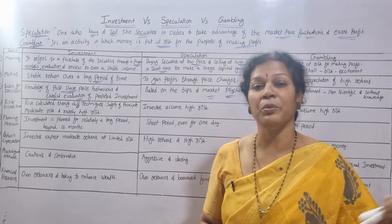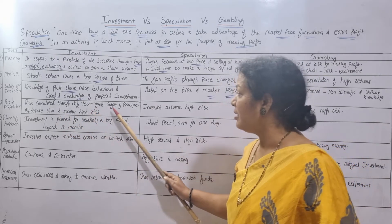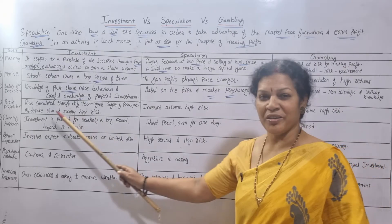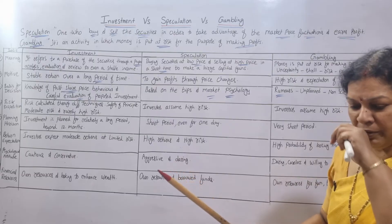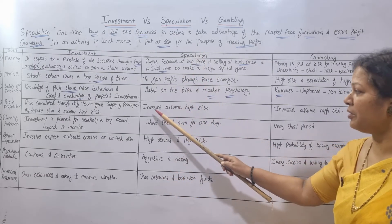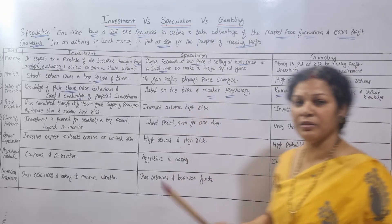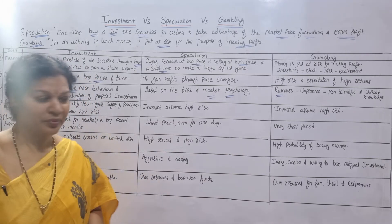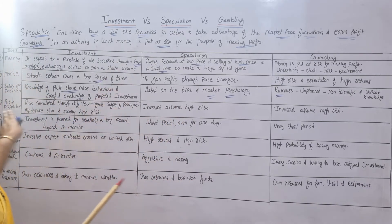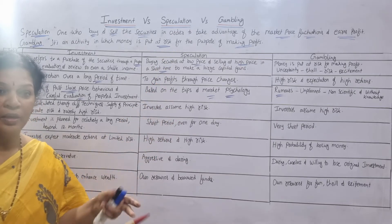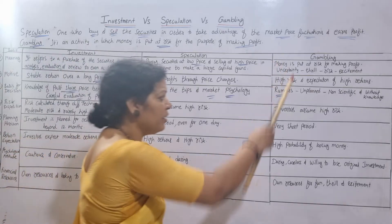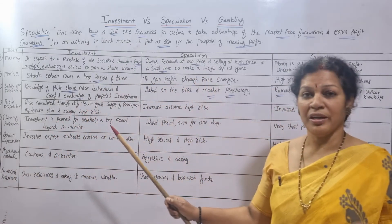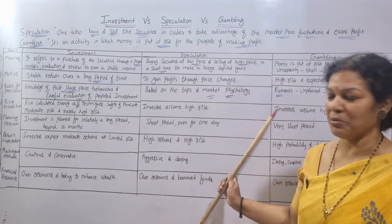The fourth basis is risk disposition. For investment, risk is calculated using different techniques and methods. Safety of principal is the main motto, with moderate risk and rarely high risk. For speculation, investors assume high risk — they may get profit or they may lose. For gambling, risk is also high; overall, investment carries moderate risk, speculation high risk, and gambling very high risk.